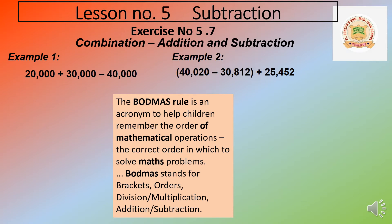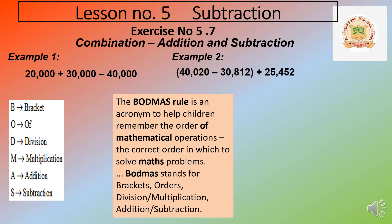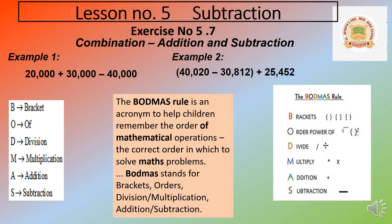BODMAS stands for: B for Brackets, O for Orders, D for Division, M for Multiplication, A for Addition, S for Subtraction. We can remember it with symbols. Brackets means round bracket, flower bracket, and square bracket. All three types of brackets in the BODMAS rule must be solved first. Orders means square roots — simplifying square roots is called order or power.